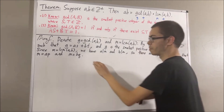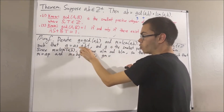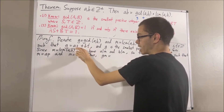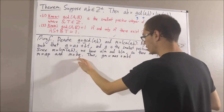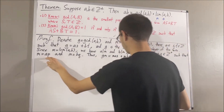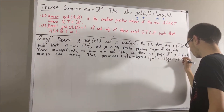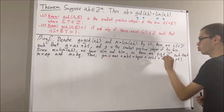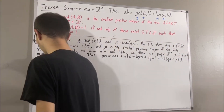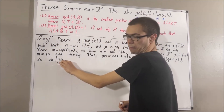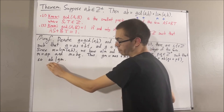Now let's multiply M on both sides of the equation G equals AS plus BT. On the left-hand side we get GM. On the right-hand side, distributing M, we get MAS plus MBT. Replacing one M with BQ and the other with AP, and factoring out AB from both terms, we see that GM is equal to AB times an integer. Therefore AB is a divisor of GM. Since GM is a positive integer, every divisor of GM must be less than or equal to GM. Therefore AB is less than or equal to GM.